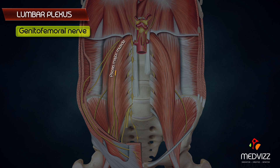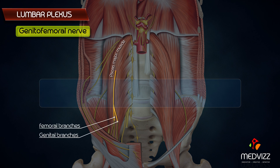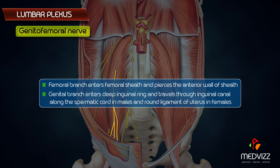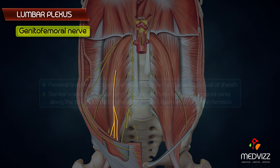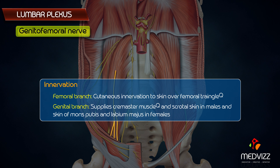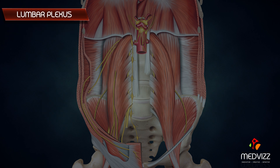The genitofemoral nerve passes forwards through the psoas, piercing it, and runs on the anterior surface of the psoas above the inguinal ligament. It divides into genital and femoral branches. The femoral branch enters the femoral sheath and pierces its anterior wall, providing cutaneous innervation to the skin over the femoral triangle. The genital branch enters the deep inguinal ring and travels through the inguinal canal along the spermatic cord in males and round ligament of the uterus in females, supplying the cremaster muscle, scrotal skin in males, and skin of mons pubis and labia majora in females.